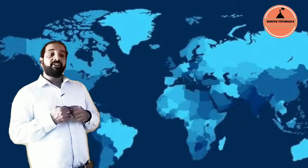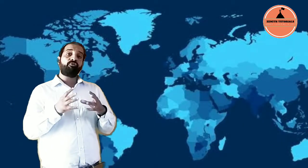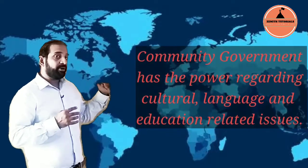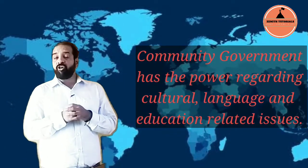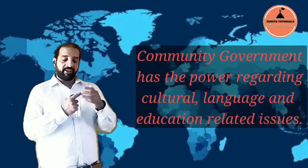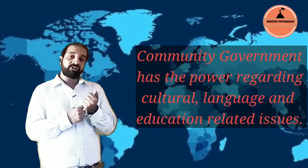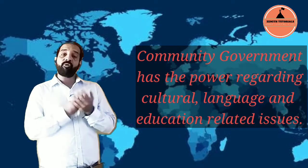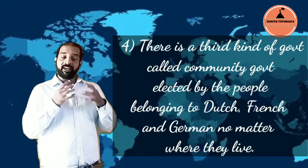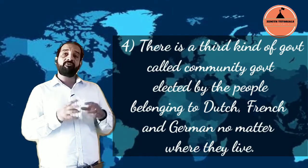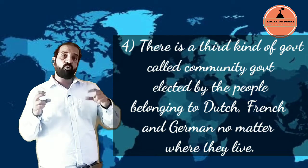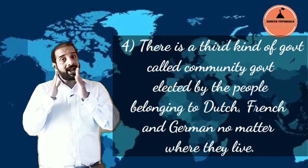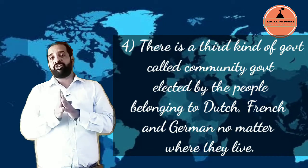Other than this, they also formed what is called a community government. What does the community government do? It takes care of cultural, religious, and educational affairs. And here also, it was very important to have equal representation from the Dutch and the French community.